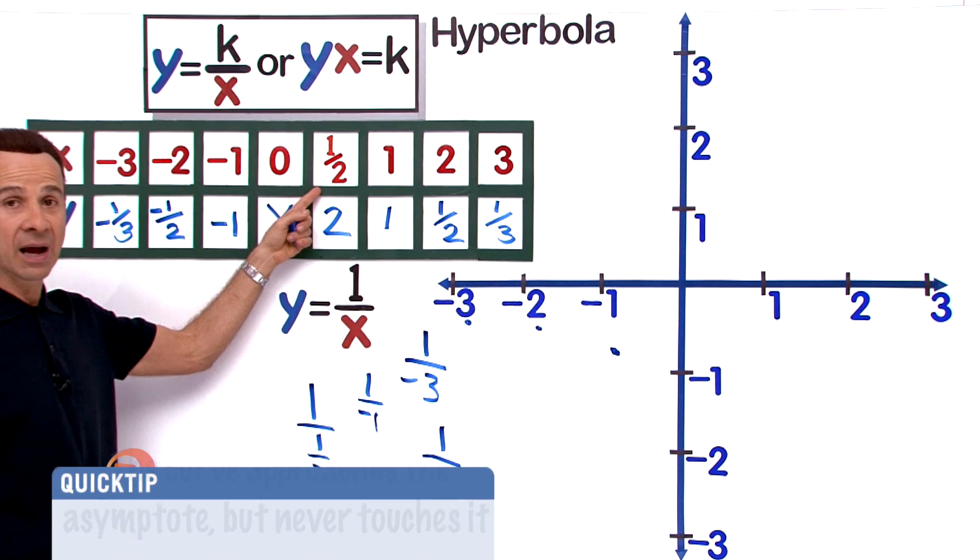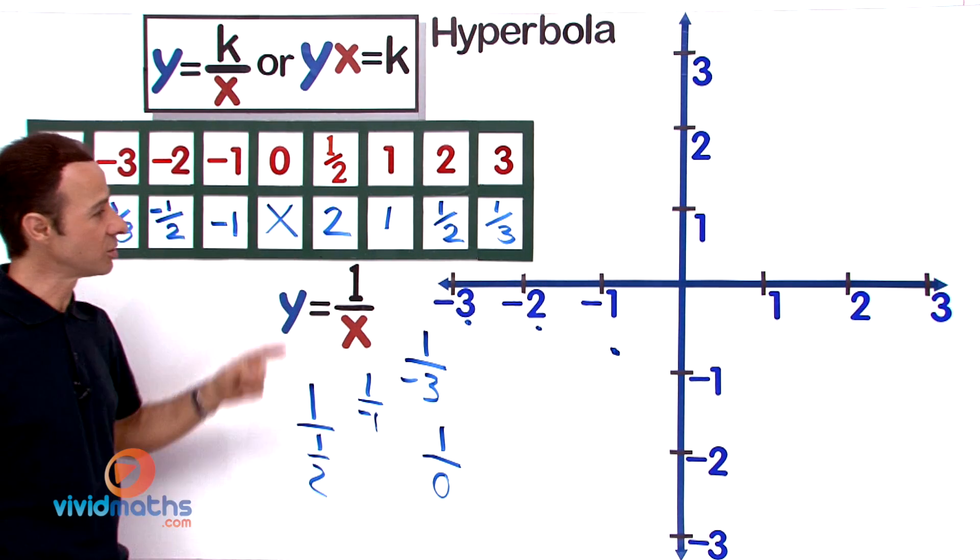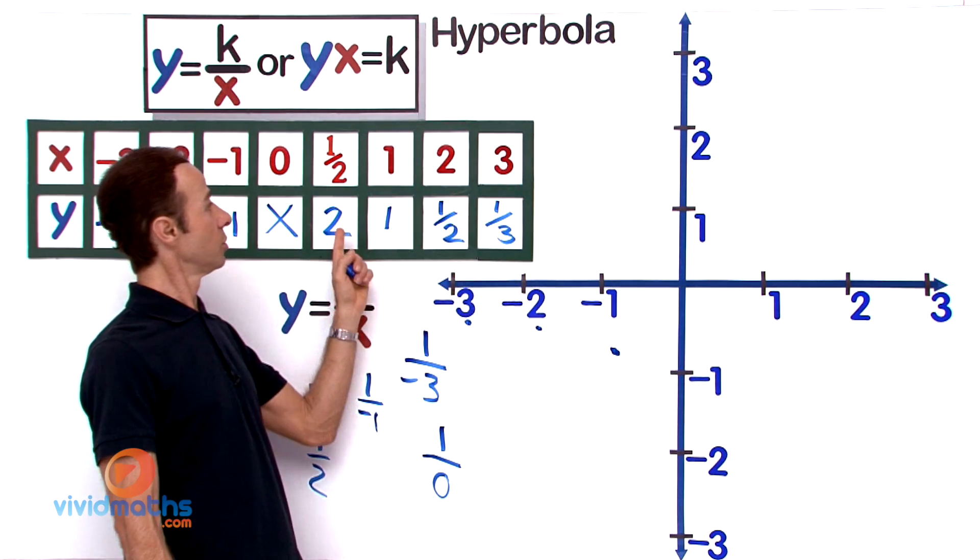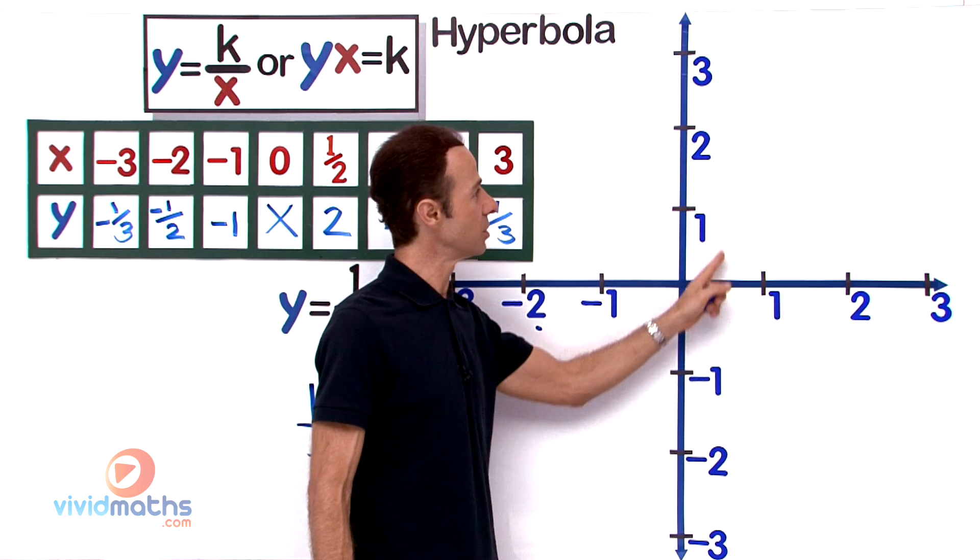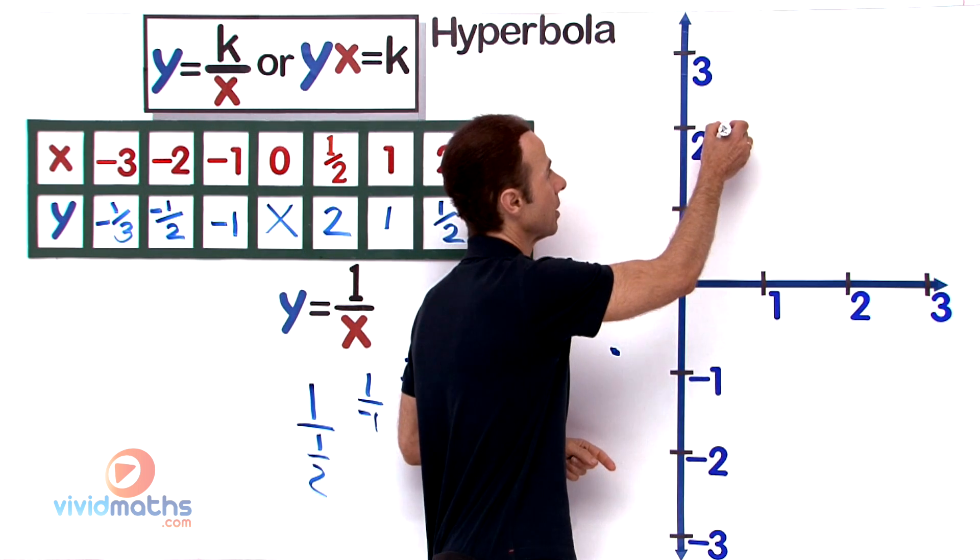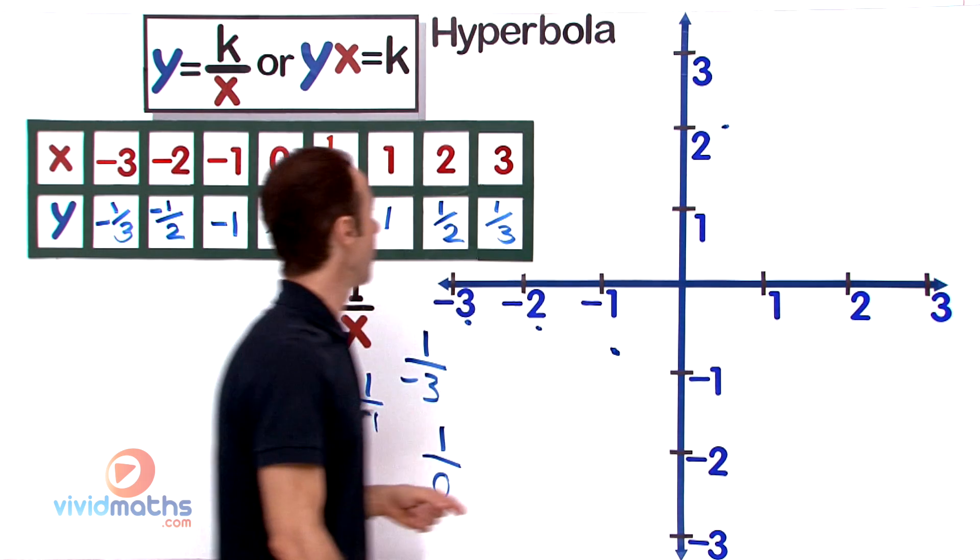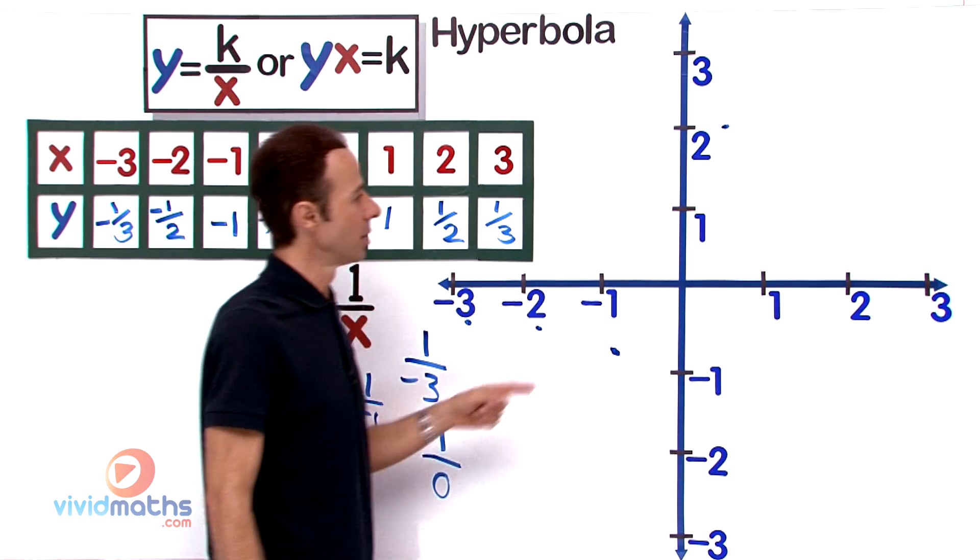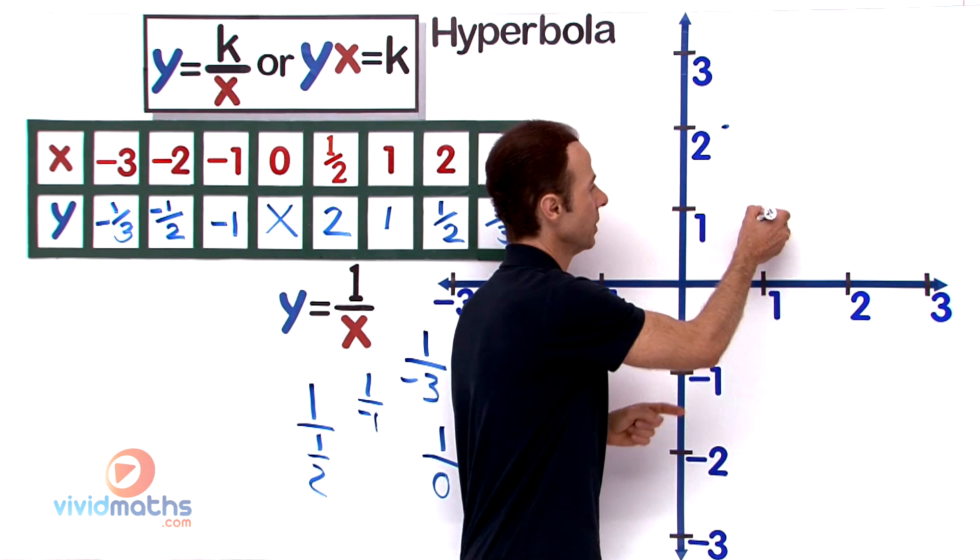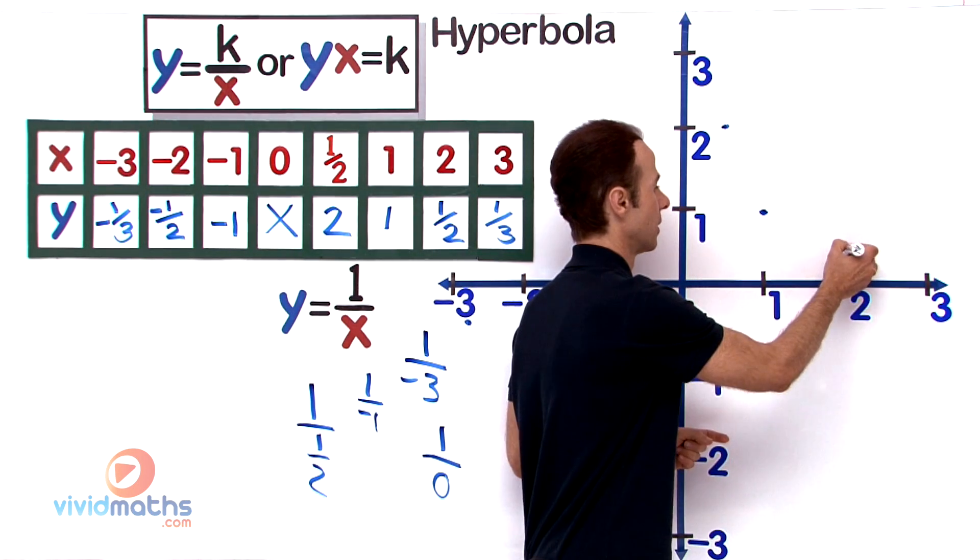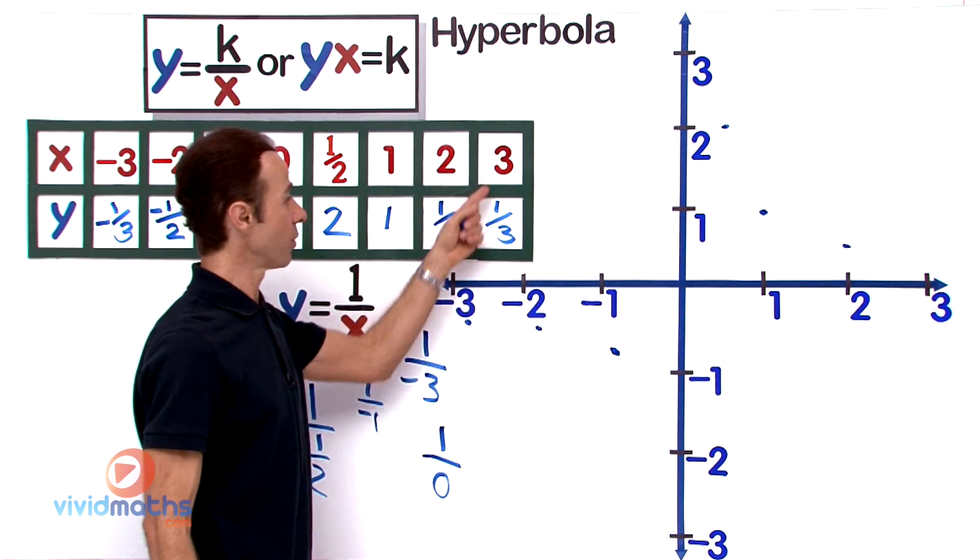And that's at the point 1/2. Let's see what we get for 1/2: that's 2. So 1/2 is about there and it goes up to the point of 2. 1/2, 2, let's have a look at that. Yes, that looks fine. We got 1, 1: that will be approximately there. 2, 1/2: there. And we have 3, 1 third: right there.